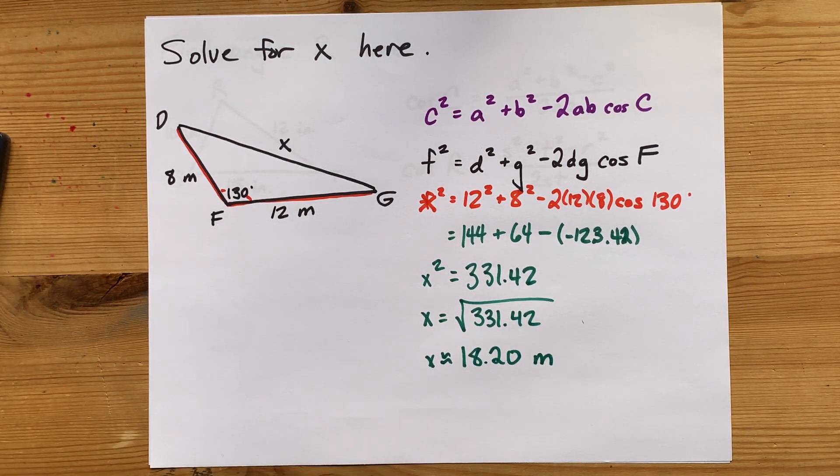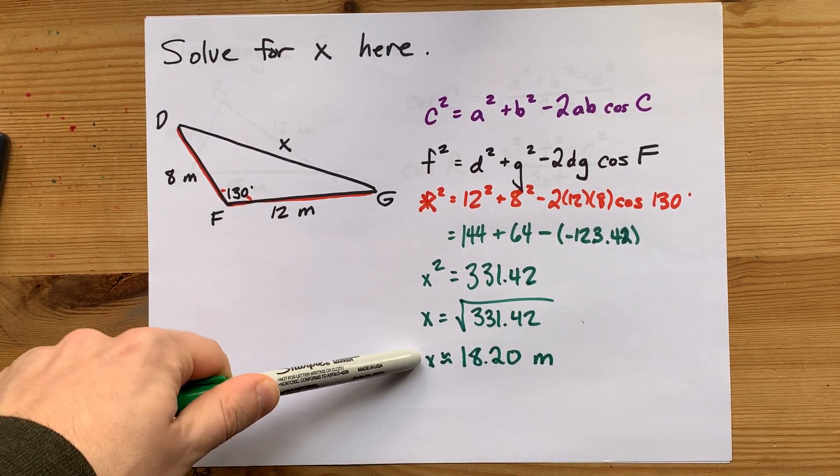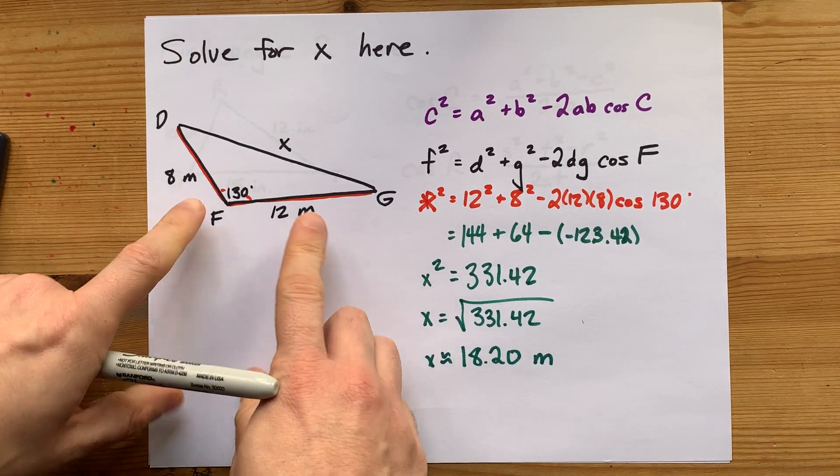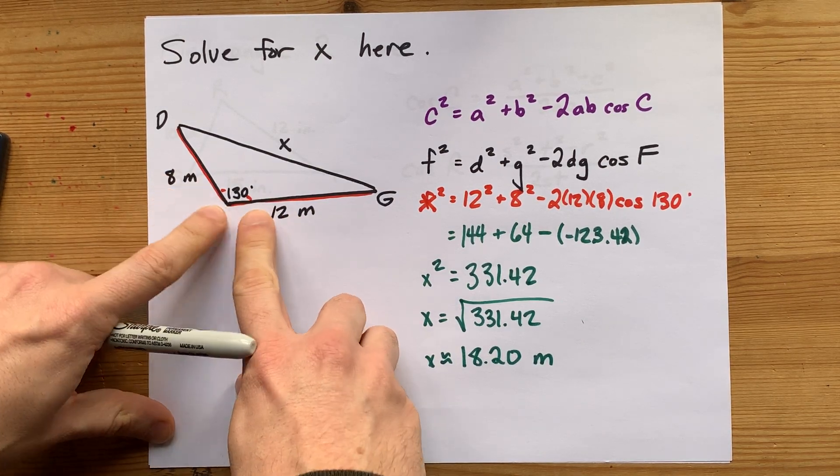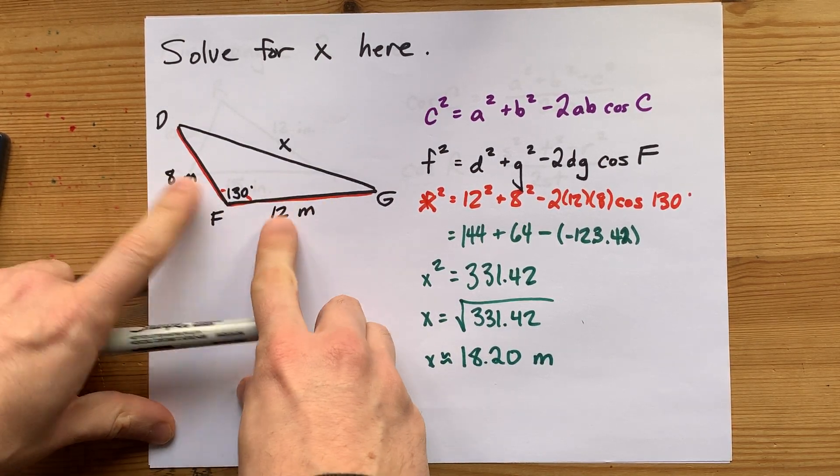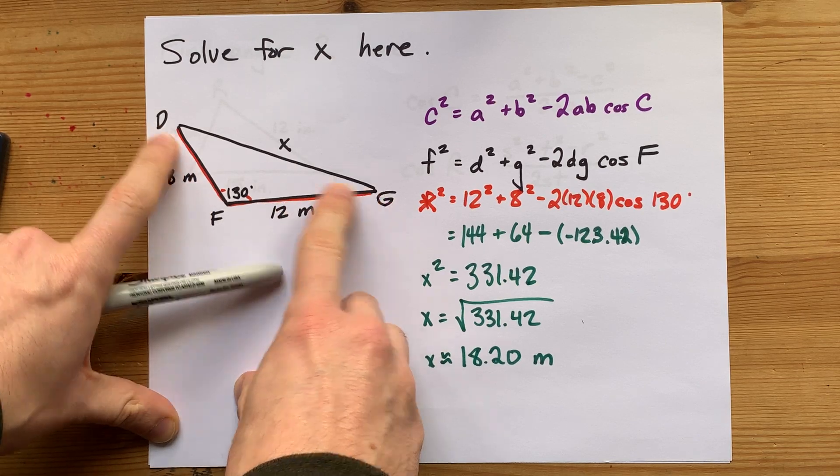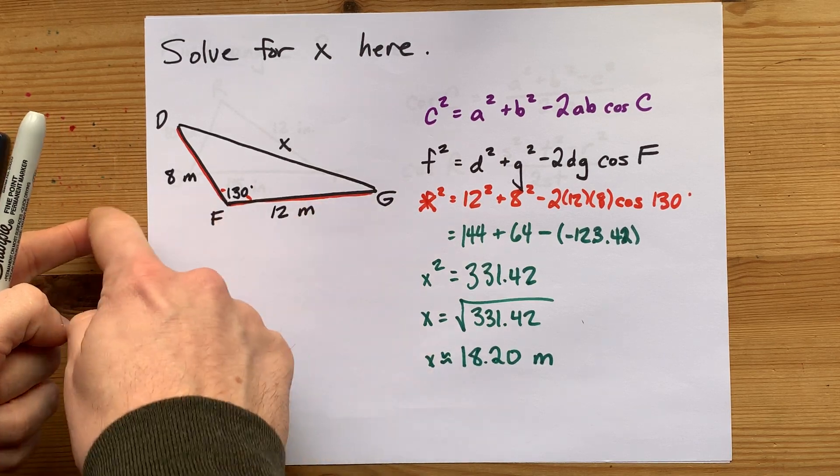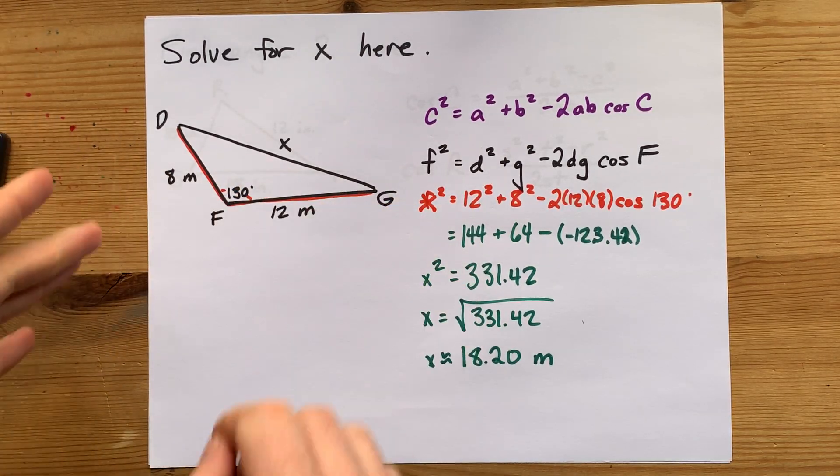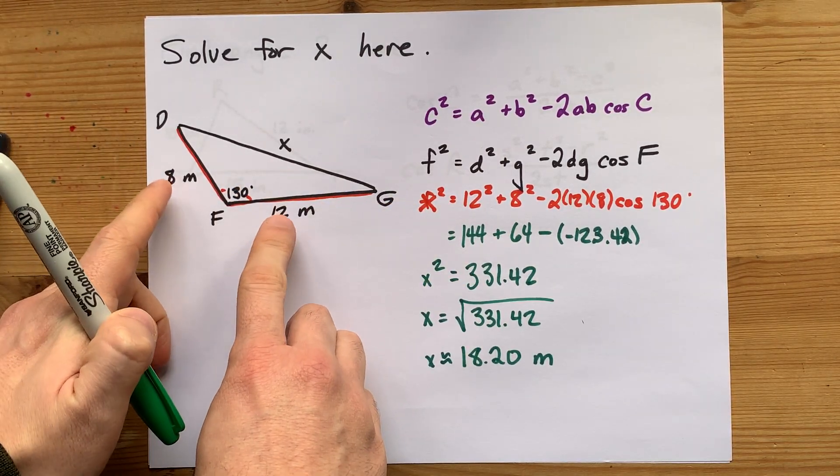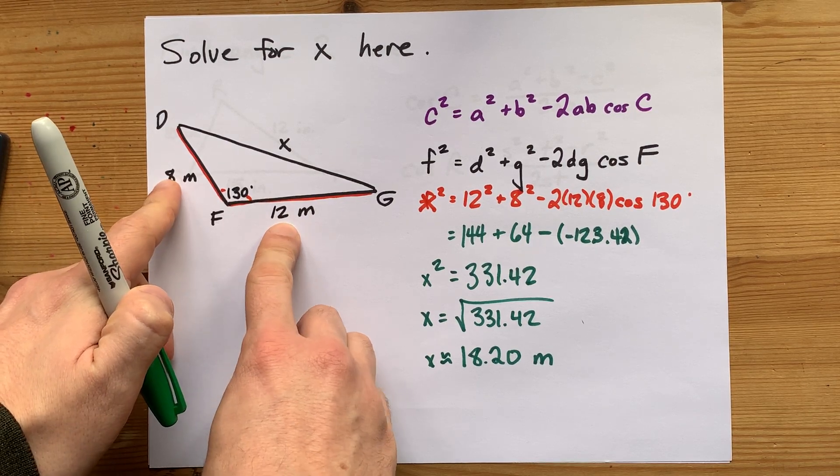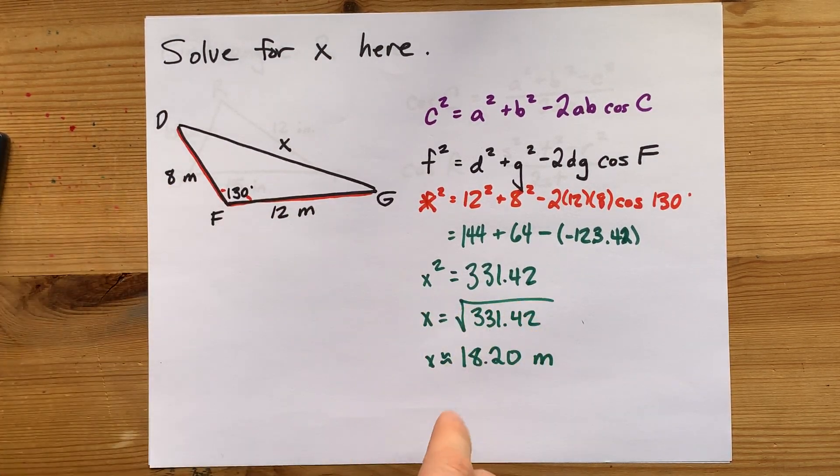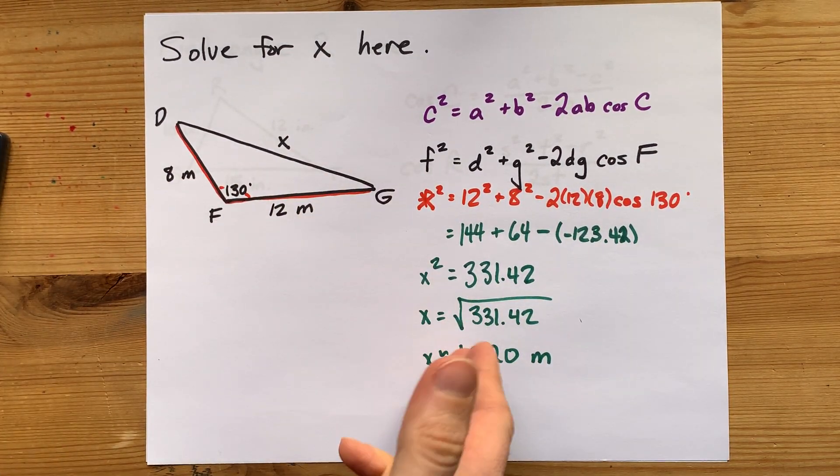Now as a check, I just make sure that the answer I got is no larger than the sum of these two. The farthest apart that 8 and 12 meters in either direction could ever possibly get is 20 meters, 12 this way and 8 this way. But that wouldn't even be a triangle. That would just be a flat line. As long as the answer I get is less than 20, then the answer at least makes sense. And it does. This is 18 meters.